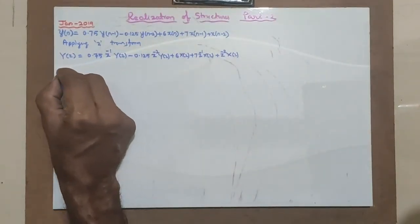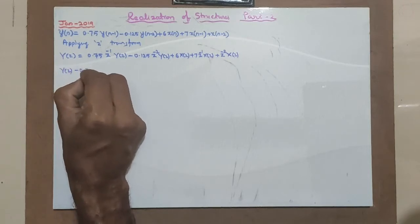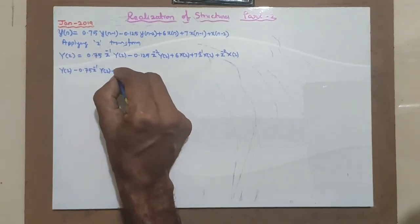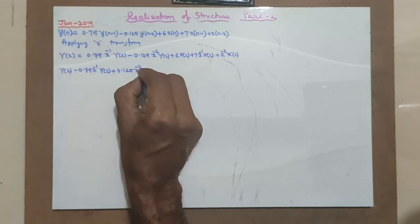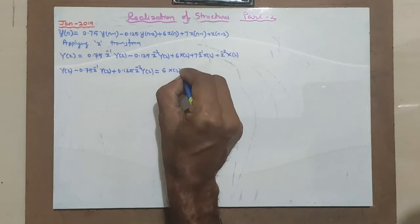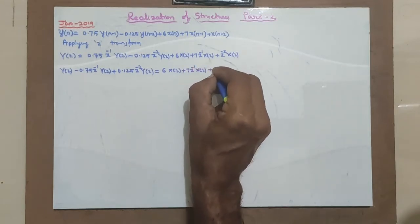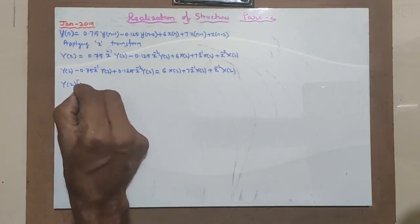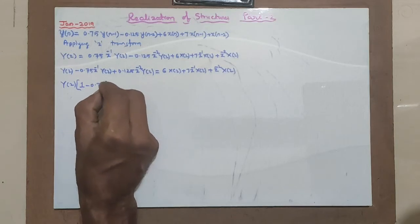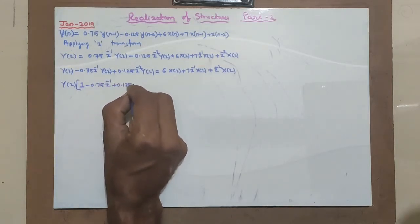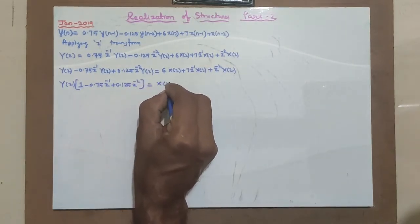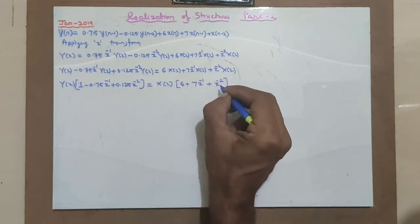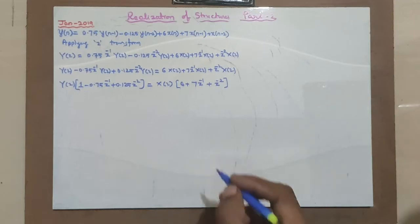Now separate out Y and X. That means Y of Z minus 0.75 Z raised to minus 1 times Y of Z plus 0.125 Z raised to minus 2 times Y of Z is equal to 6 X of Z plus 7 Z raised to minus 1 times X of Z plus Z raised to minus 2 times X of Z.